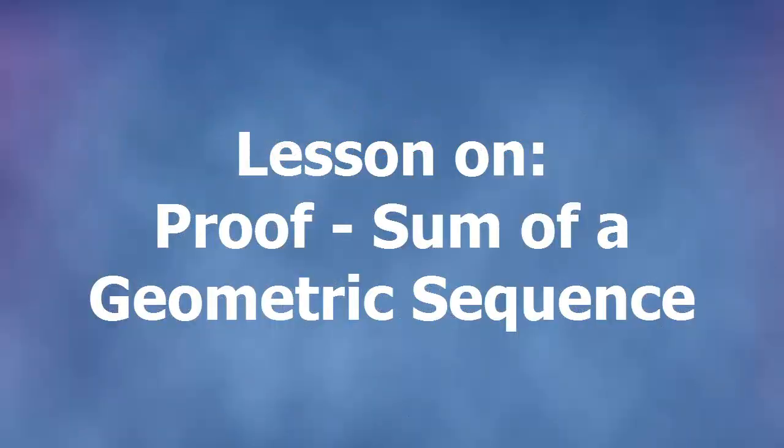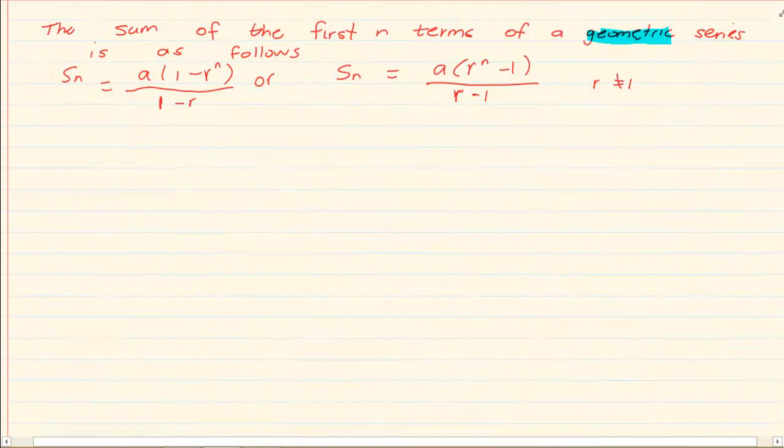Hi and welcome to my maths class. Today we are going to do the theorem that states the sum of the first n terms of a geometric series is as follows: Sn is equal to a, which is your first term, open brackets 1 minus r, which is your ratio to the power of n number of terms, over 1 minus r.